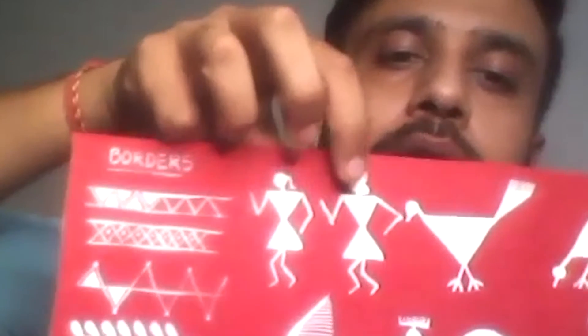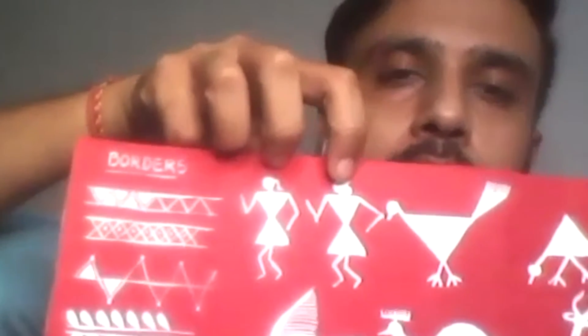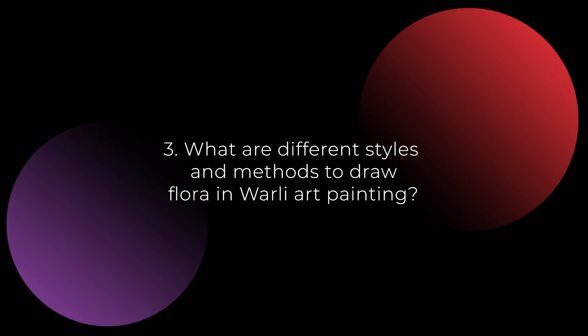What differentiates a man and a woman is the bun — for a female figure we make a bun on the backside of the head, and we can also make the female figure slightly smaller than the male figure. For trees, I've mainly drawn peepal trees, palm trees, and cactus. A palm tree looks like this, a peepal tree is made differently, and cactus is depicted with a specific round branching form.